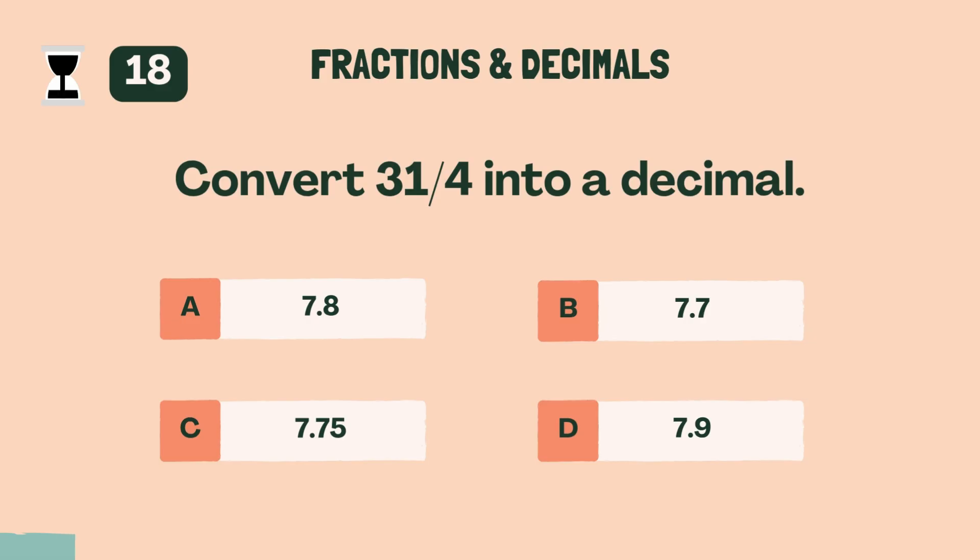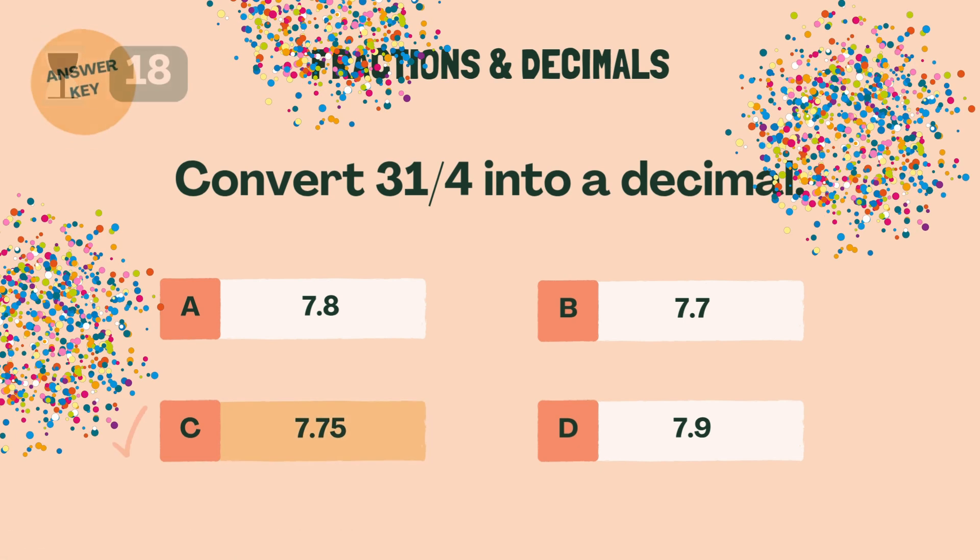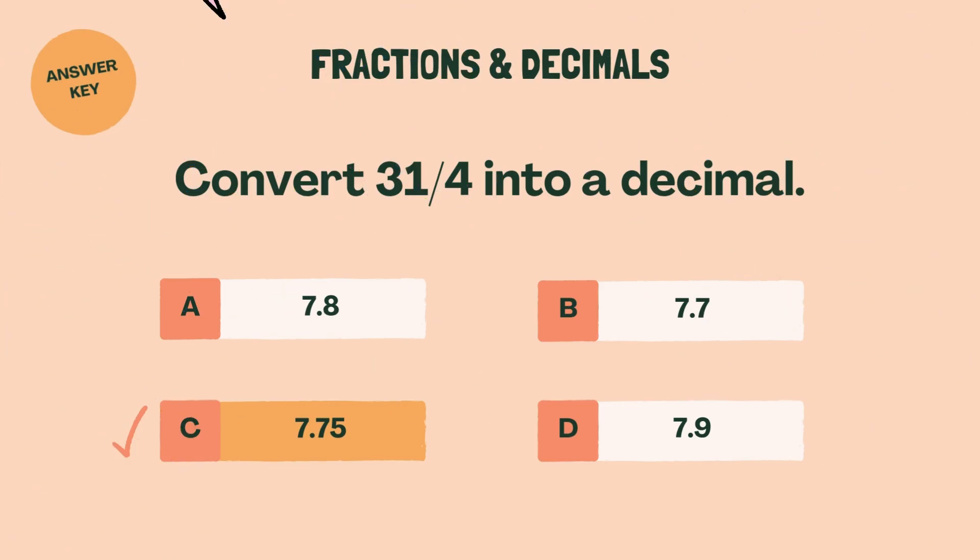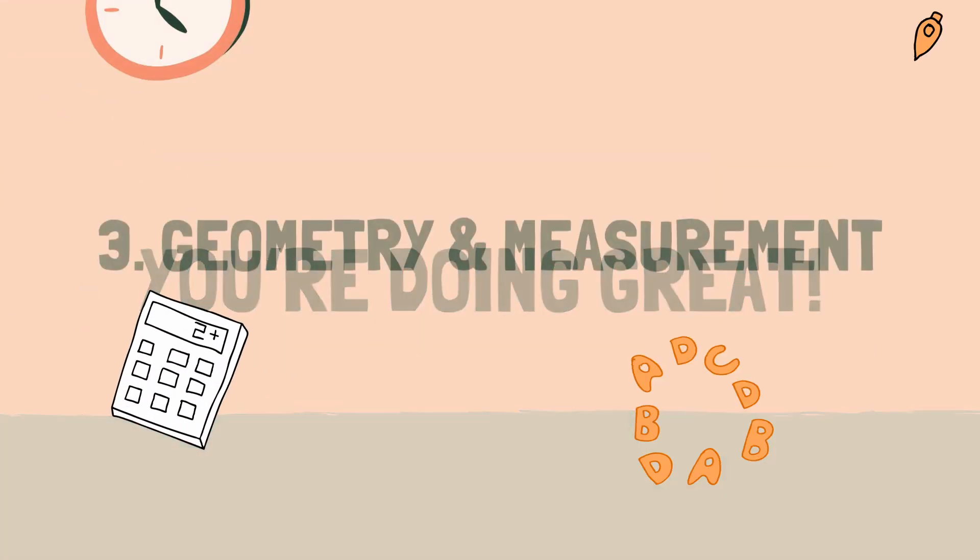Convert 31/4 into a decimal. C, 7.75. You're doing great. Time for the next category.